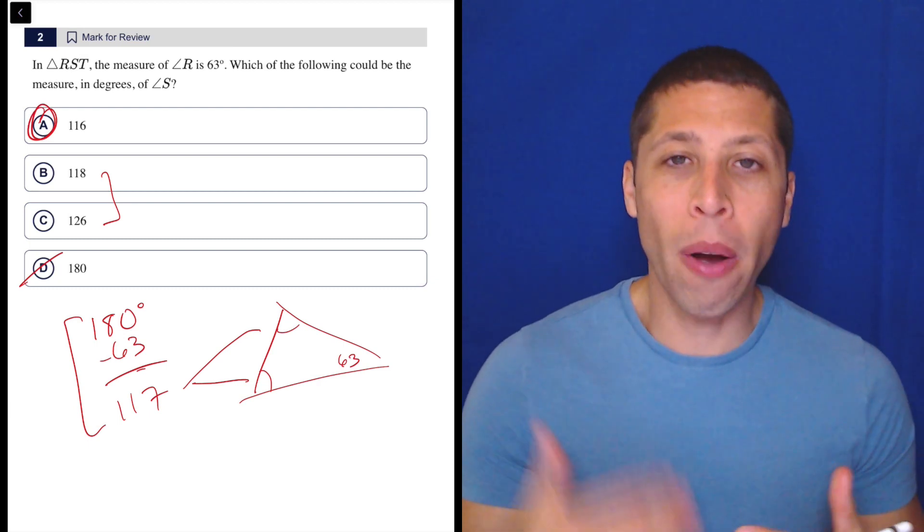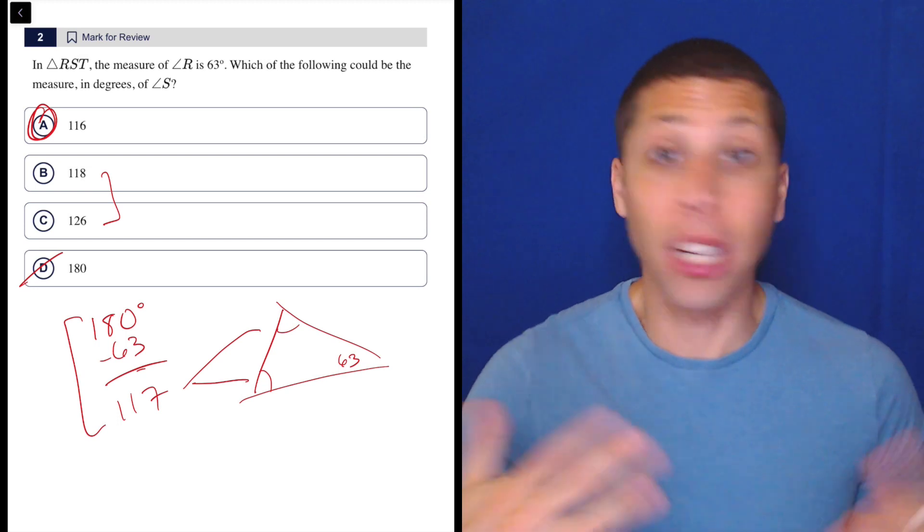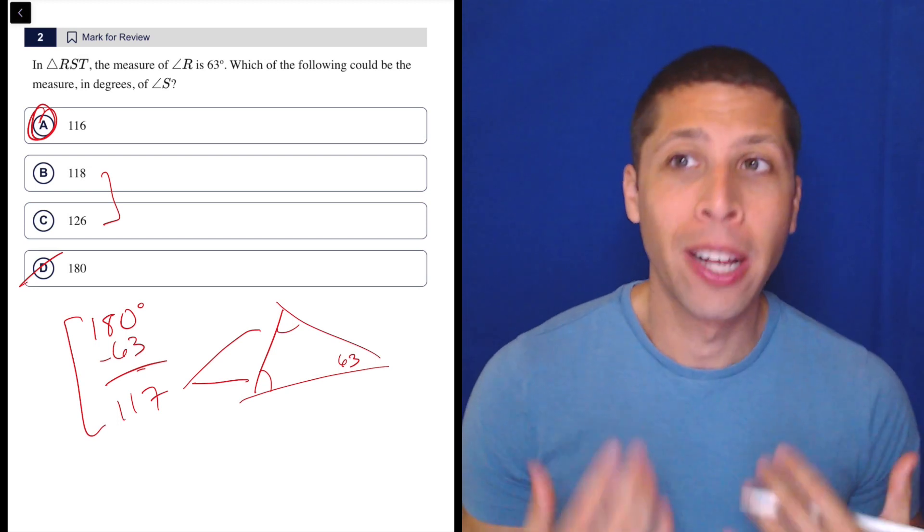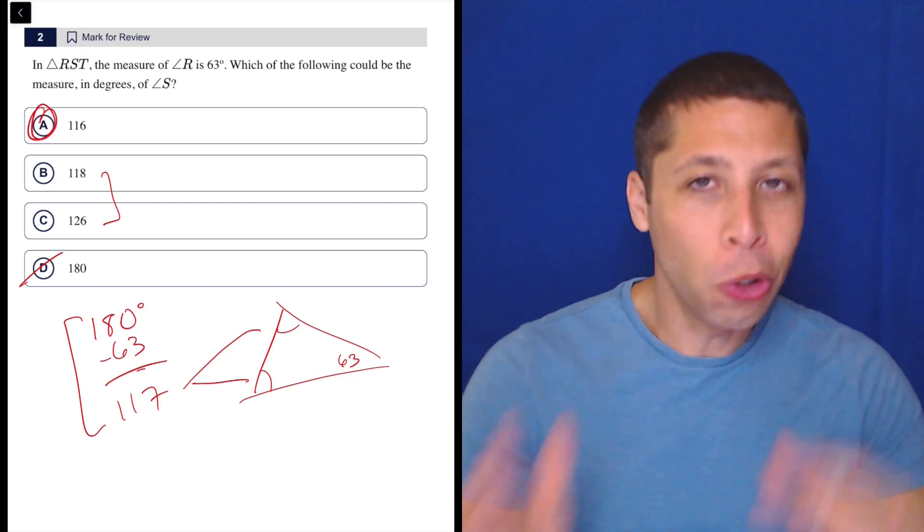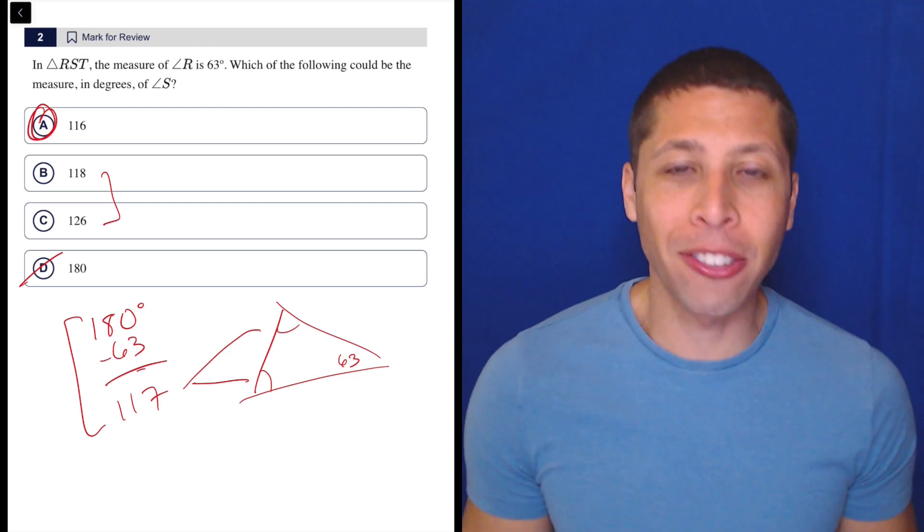The reason people are gonna get this wrong or have trouble with it is they're so afraid to do the subtraction. It's like, 'Oh, but I don't have the other angle, I don't know what to do.' Just in general on the SAT, if you can do something, you should do that. Just see what happens. Odds are good you'll figure it out.